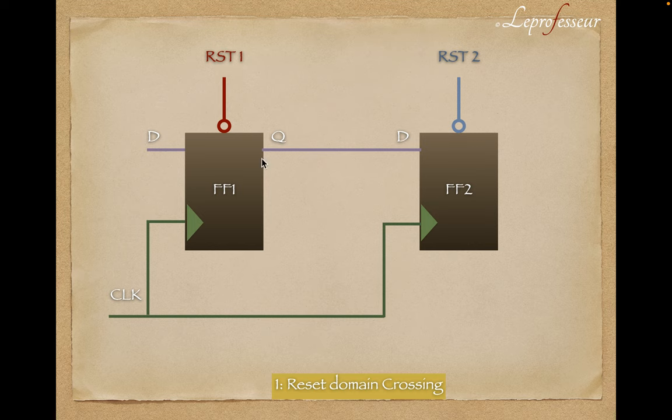the same clock. However, the first flop is getting reset one and another flop is getting reset two. Now one can argue we can have one reset pin driving two resets. For simplicity, let's assume that we are getting the reset for flop one from a different pin and reset for flop two from a different pin.